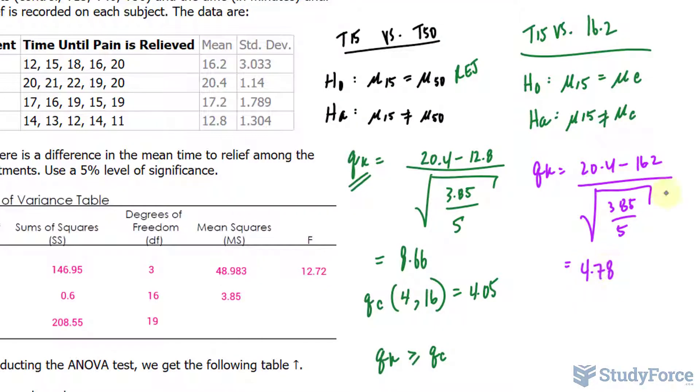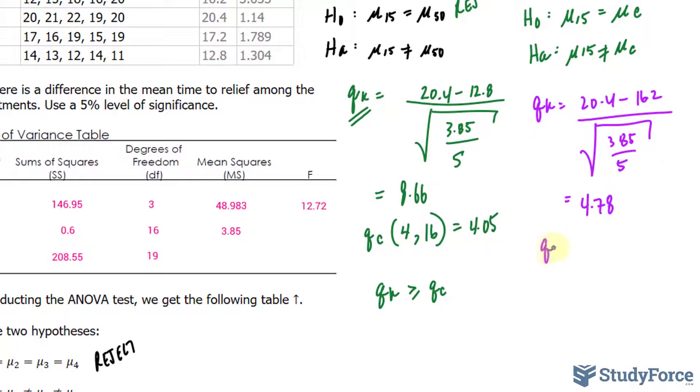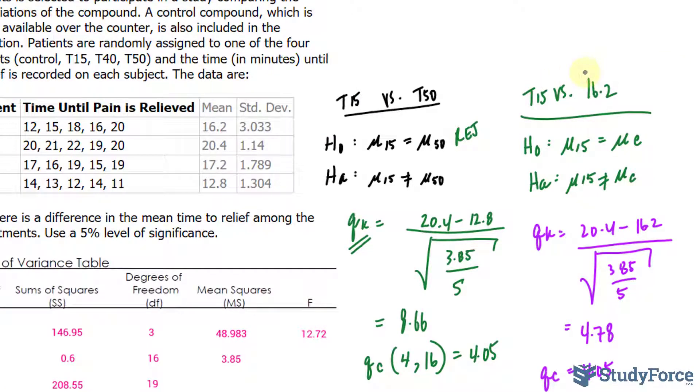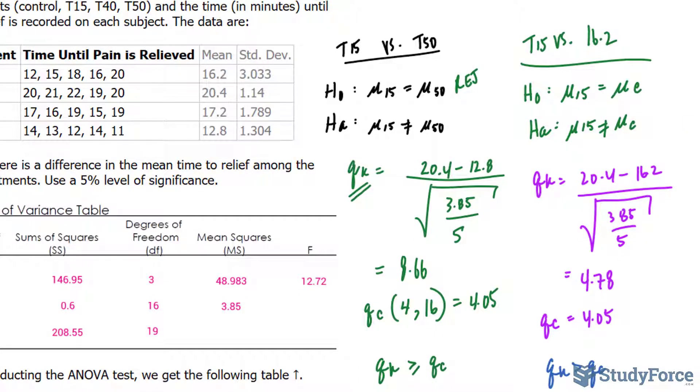The Qc value does not change. Again, the Qₖ value is greater than the Qc value, so these two groups are significantly different. We reject this null hypothesis in favor of the alternative. We have to cycle through this again. This time, we'll compare T15 versus the third smallest mean, being T40.